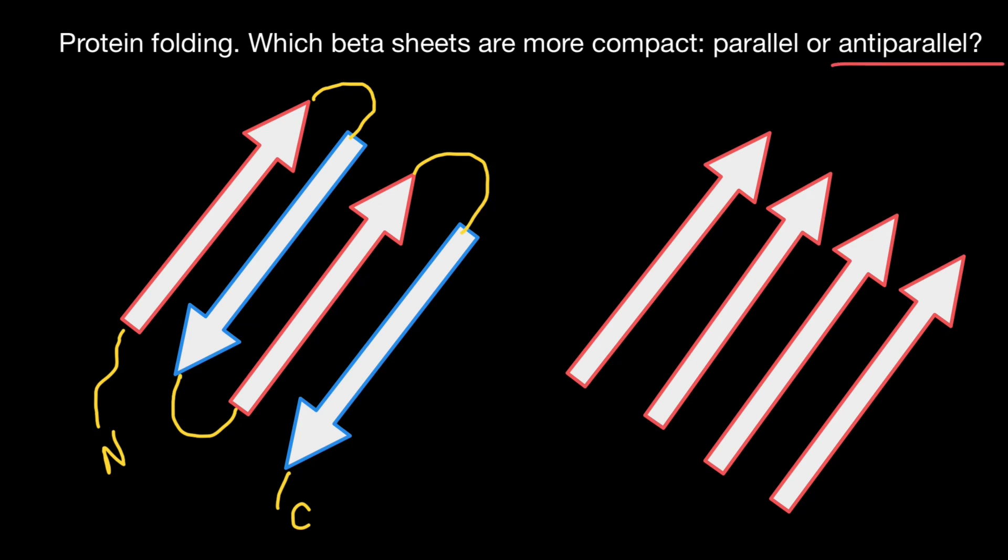Now let's take a look at the parallel. What's going to happen here? Again, let's say here we have N terminus.